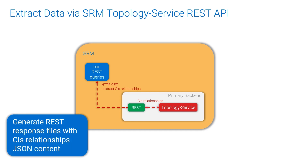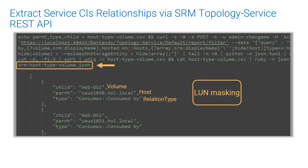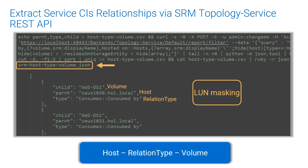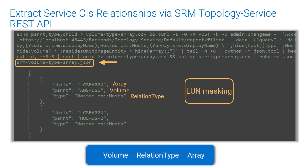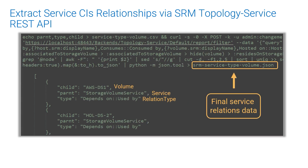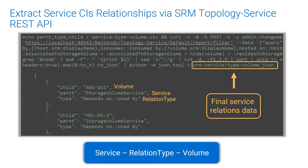CI relationships data from the topology RDF store is extracted via topology service REST API and stored into JSON files. Here's an example of a curl command for an HTTP POST query to retrieve host-volume relationship data. A similar command is used for volume-array relationship data, and the last example is for service-volume relationship data.